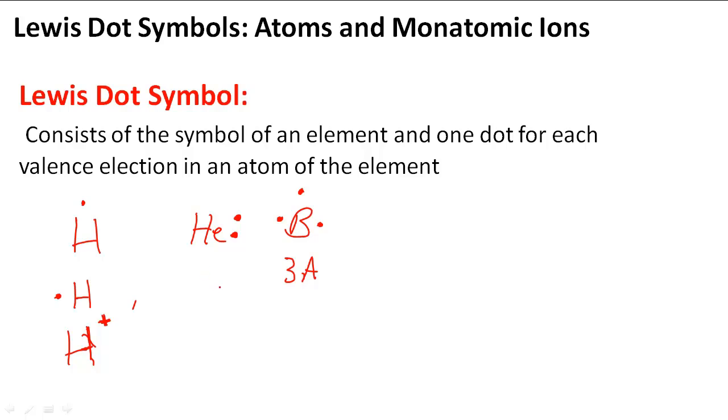HE is not in group 2A, but it has only two valence electrons. It can only fit two. So let's find another example. BE is a good example of two valence electrons.